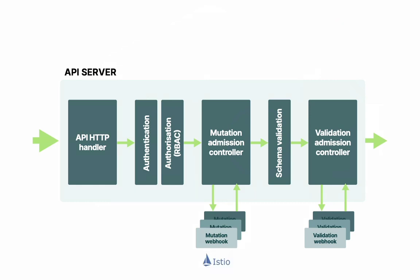There are two excellent examples of custom admission controllers. Istio automatically injects an extra Envoy proxy container to all pods — this is an example of a mutations admission controller. On the other hand, Open Policy Agent is an excellent example of a custom validation admission controller. It checks your resources against policies and reports any violations.